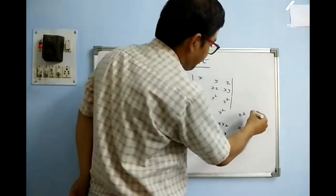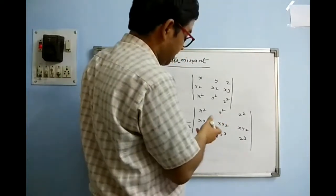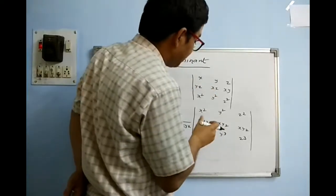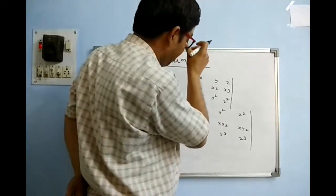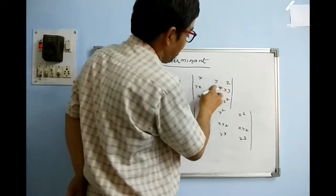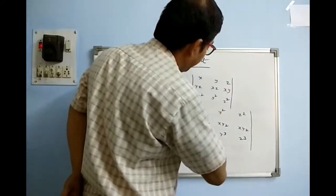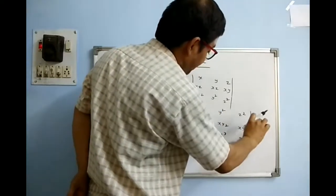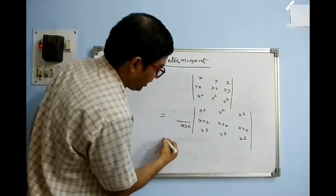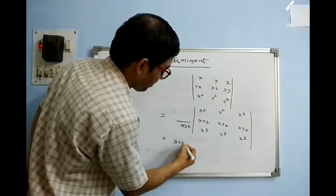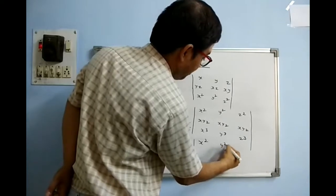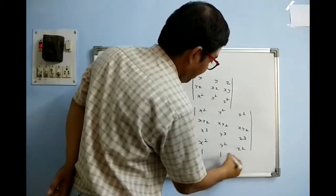By doing this, row 2 becomes xyz, xyz, xyz. Taking xyz common from R2 leaves 1, 1, 1 in that row. Also taking x, y, z common from R2 leaves x², y², z² in row 1, and 1, 1, 1 in row 2. So we have reached the semi-final: triple 1 is now present. Everything is in our control.